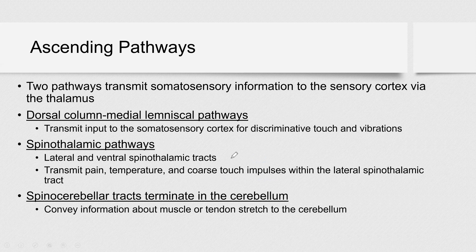Let's remember: dorsal white column transmits touch and vibration; spinothalamic transmits pain and temperature; and spinocerebellar transmits information about your muscle and tendon stretch — proprioception. Proprioception is when you can feel where your body parts are because you know if your muscles are contracted or your tendons are stretched.